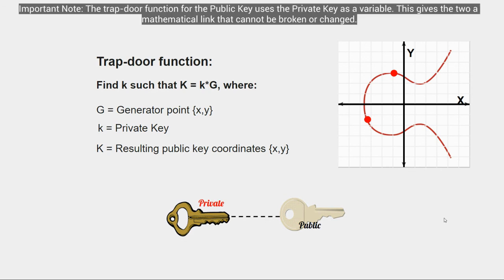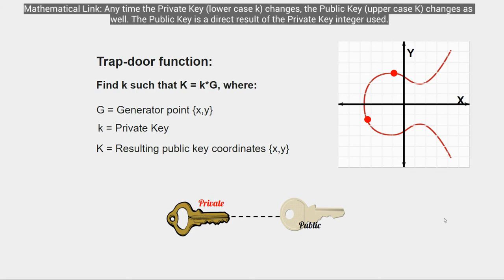As you can see from the formula, the private key is the number of times the generator point was multiplied to arrive at the public key. This trapdoor function uses the private key as a variable, giving the tool a mathematical link that cannot be broken or changed. With the elliptic curve trapdoor function, every time lowercase k — the private key — changes, uppercase K — the public key — changes as well.